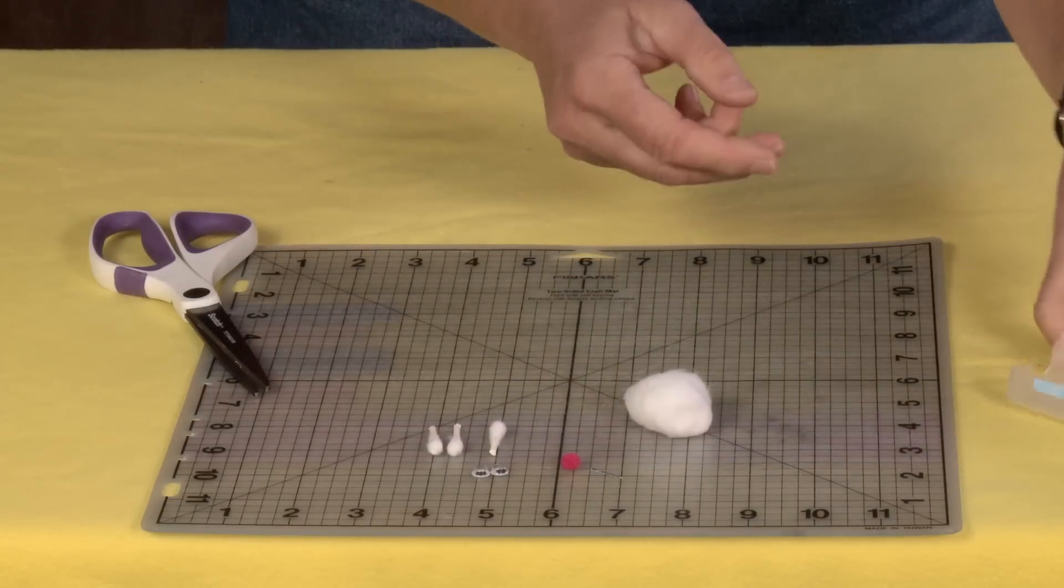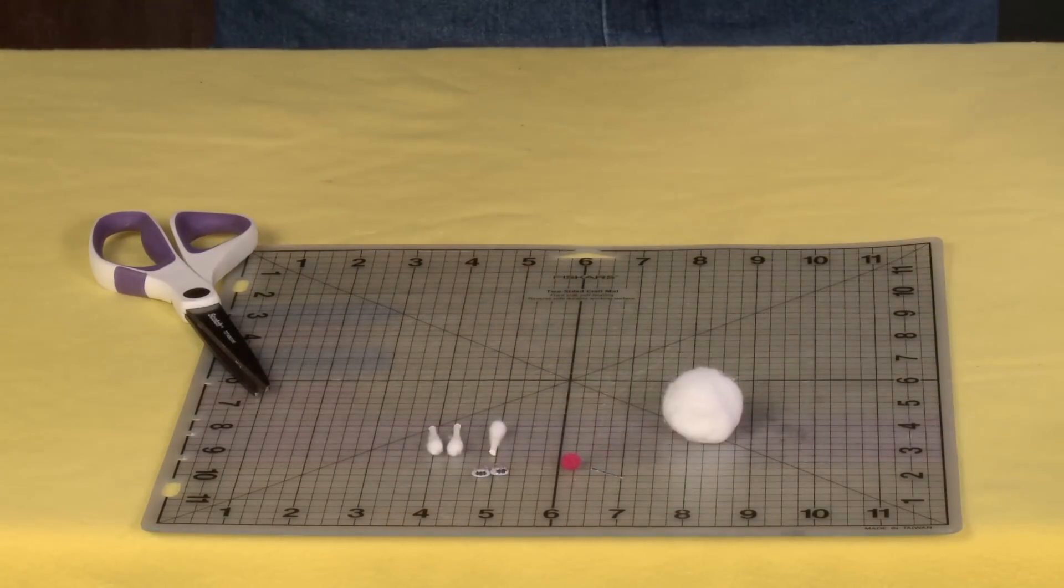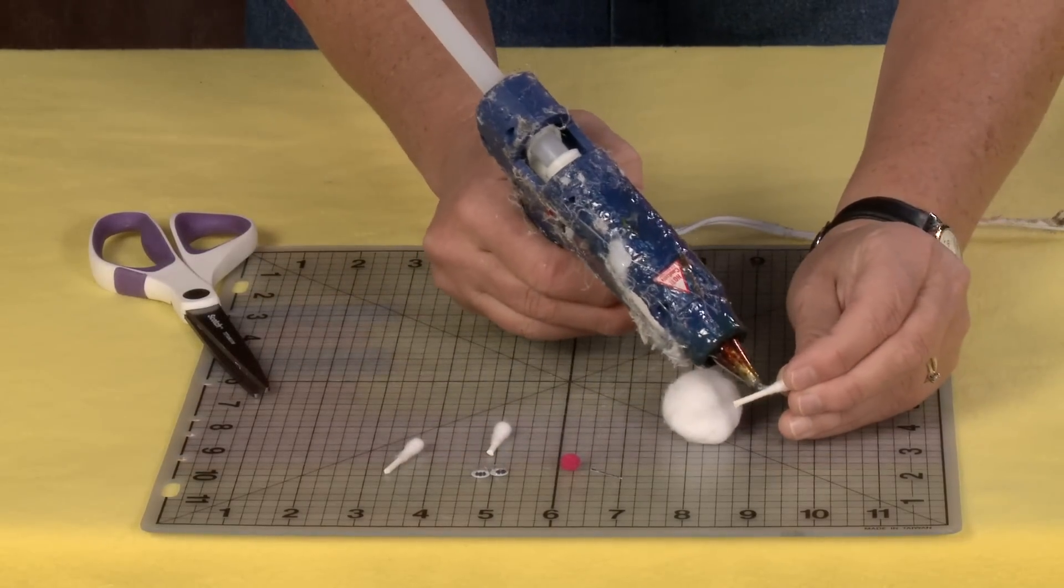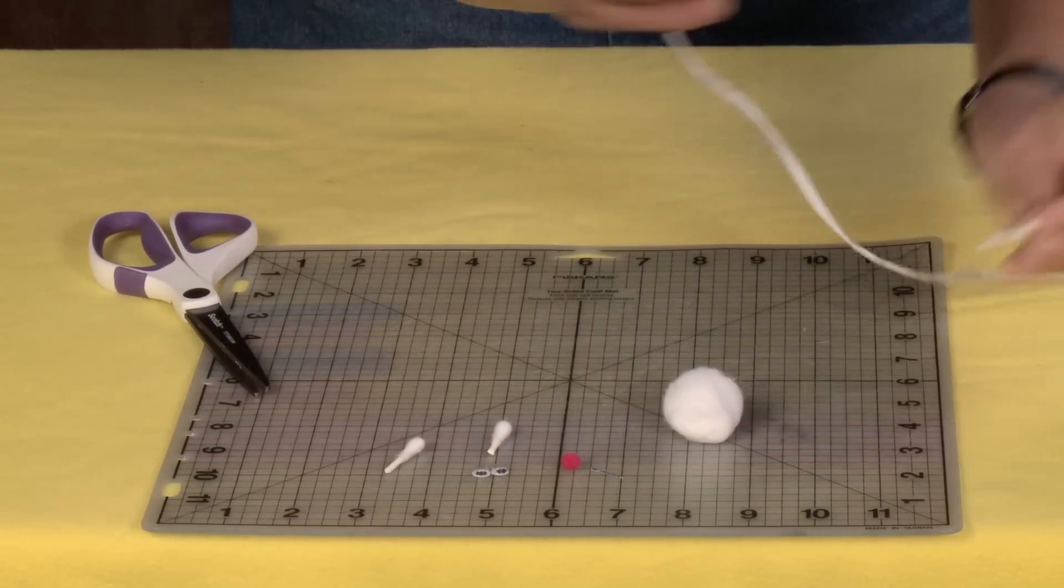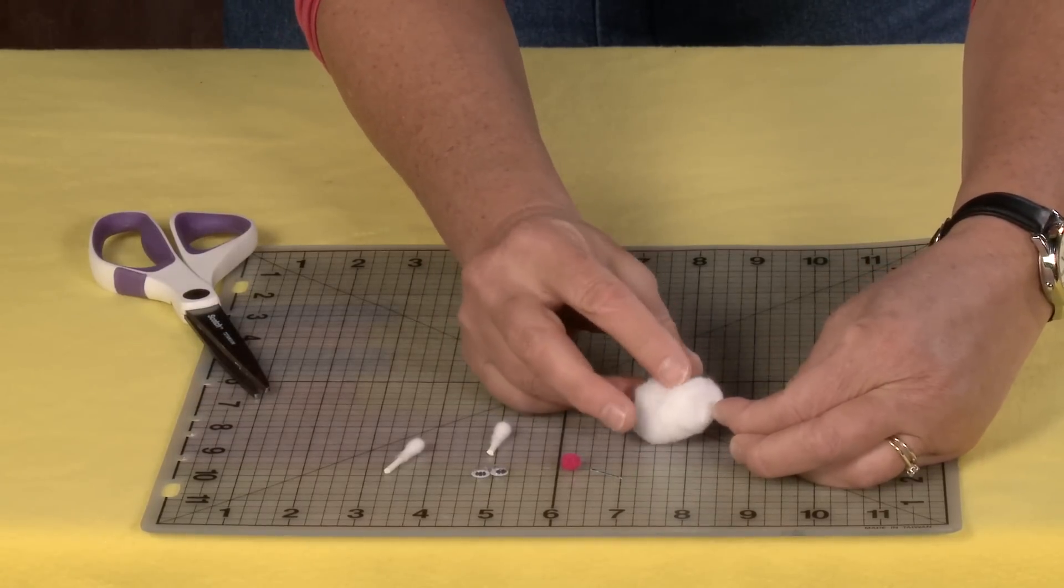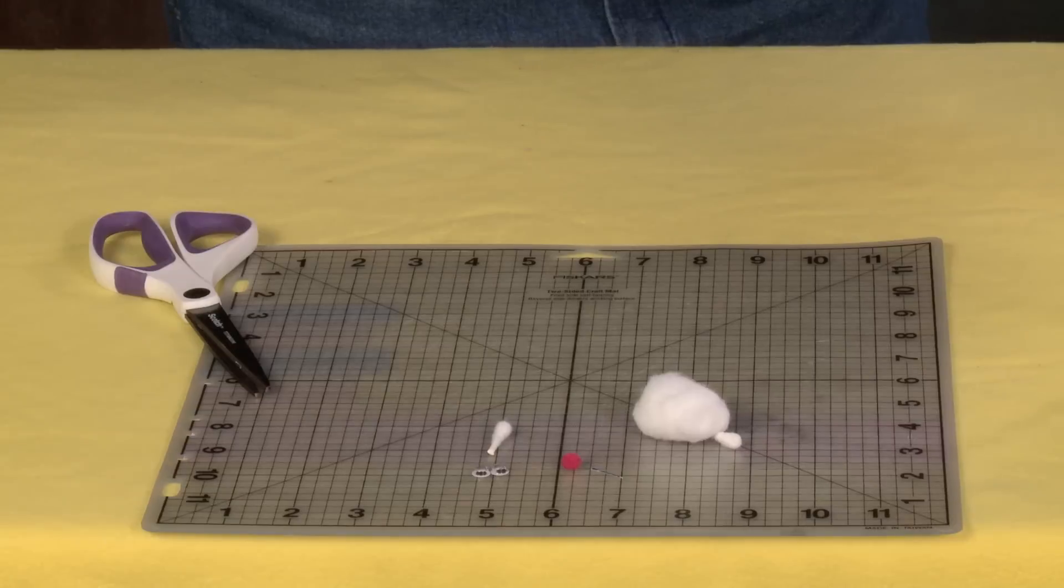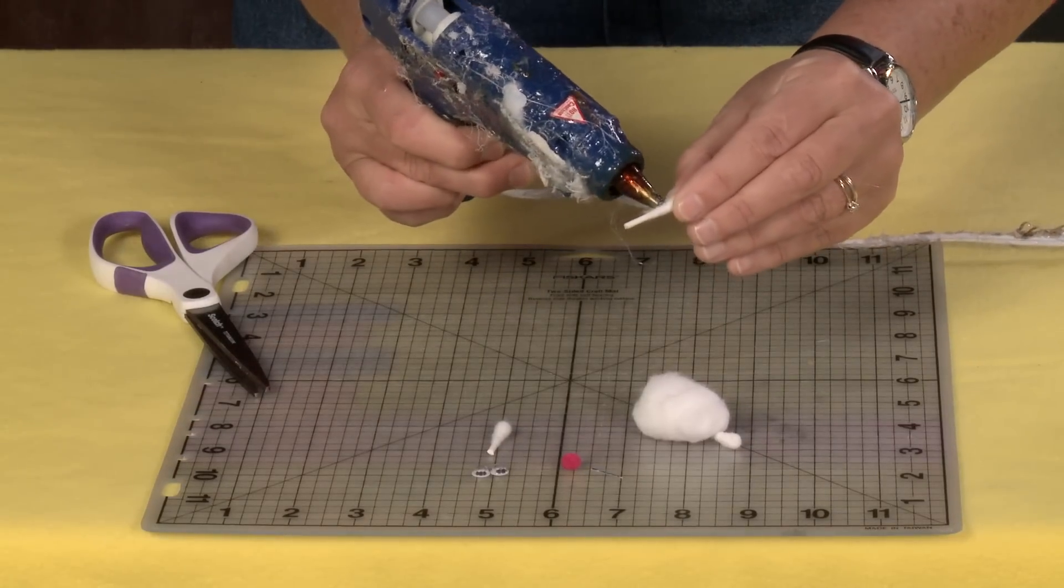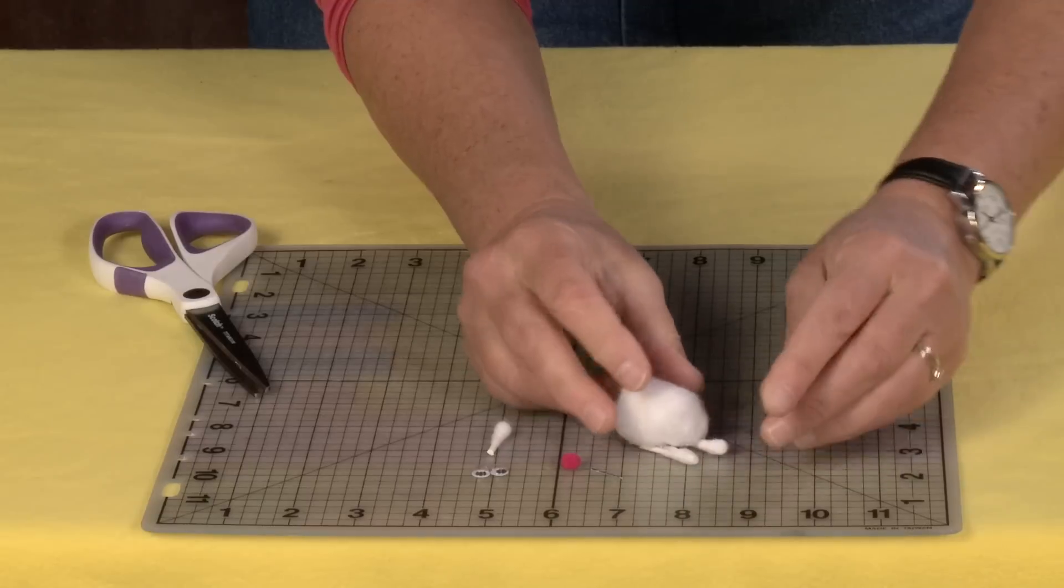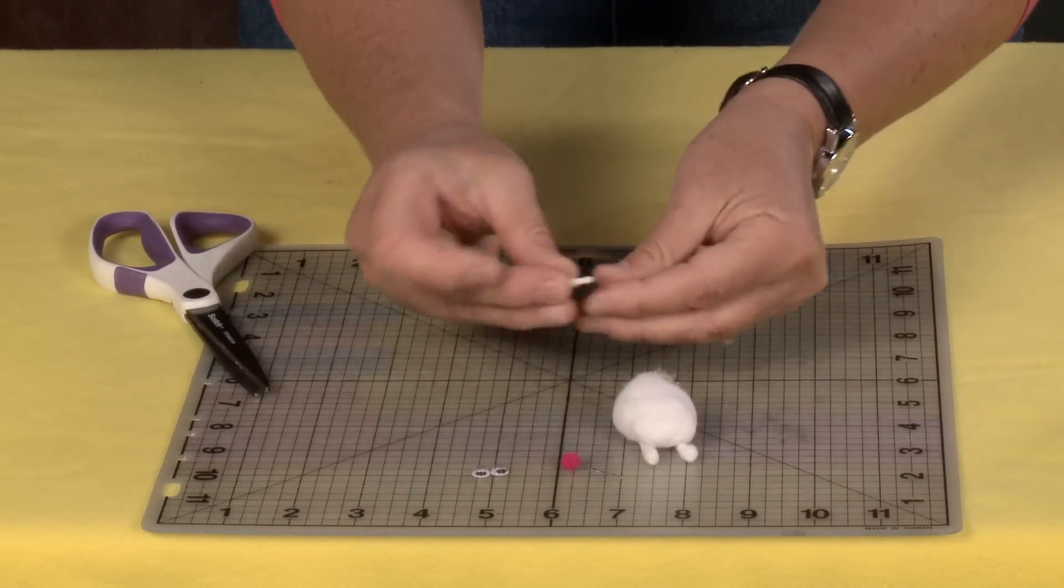Now I'm going to take my cotton swab. First thing I'm going to do is add the feet. I'm going to take my hot glue and run a bead right there along the stick, put it one side there and on the other side there. And now that's going to make him stand up, which is great.